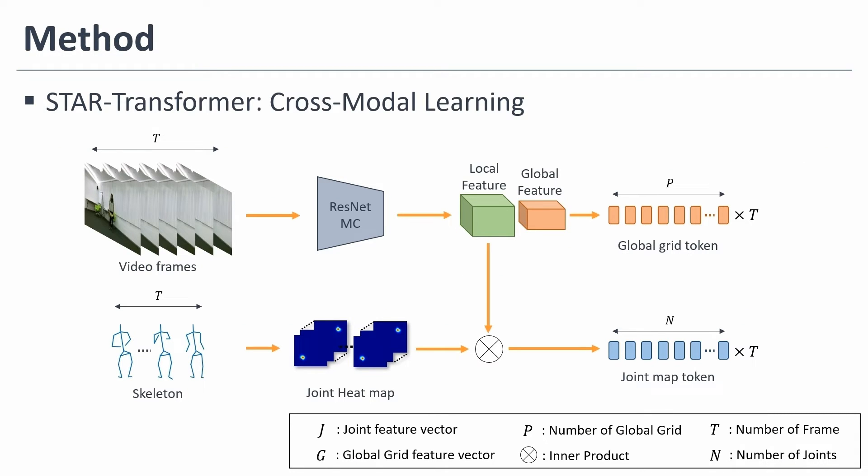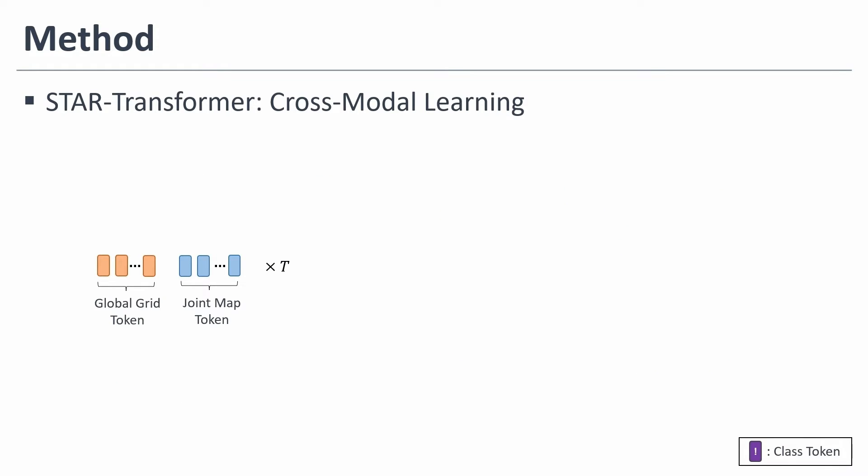STAR Transformer creates a global grid token and joint-map multimodal tokens representing video frames and skeleton data. Then, these two tokens are combined via cross-modal learning mechanism. The cross-modal learning mechanism uses multi-class tokens concatenated with two tokens from separate domains. This allows us to flexibly combine multimodal data. The resulting token is used as the input to STAR Transformer.